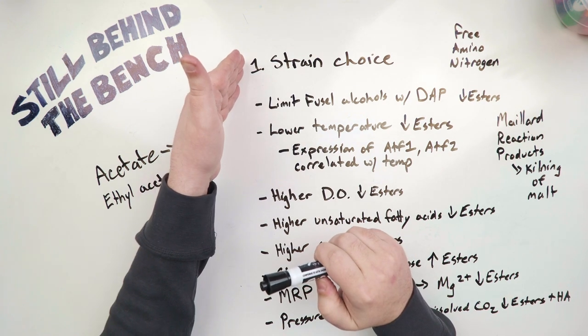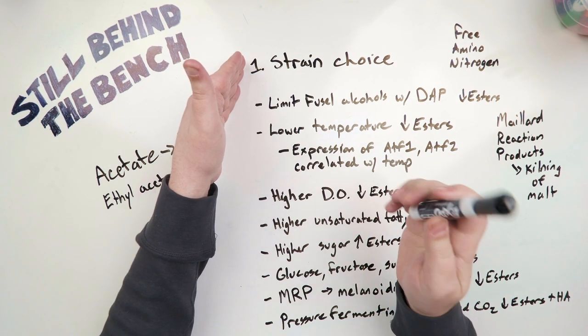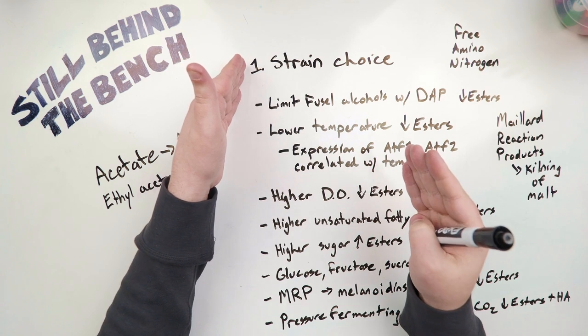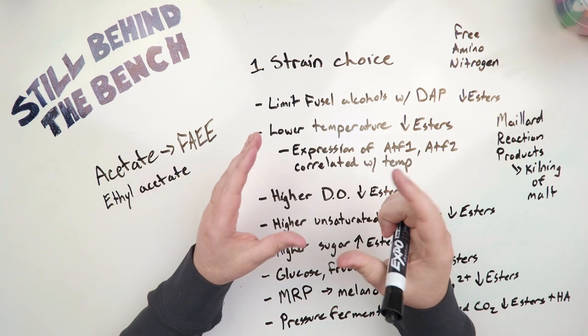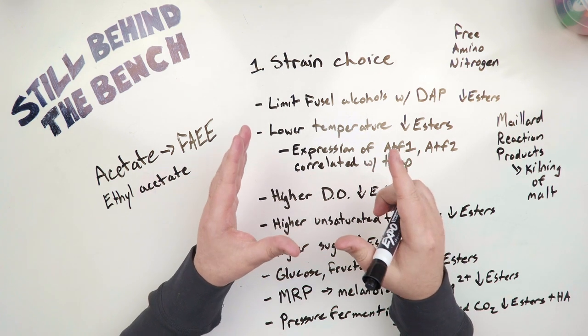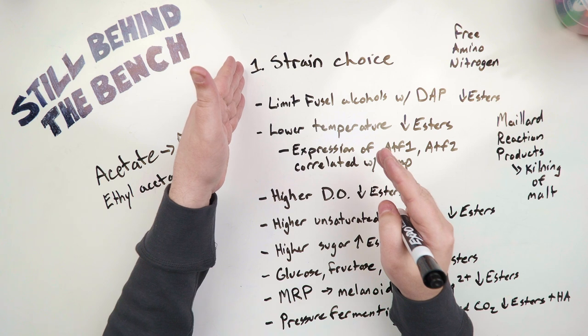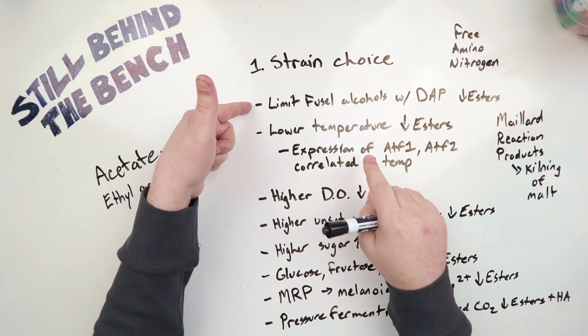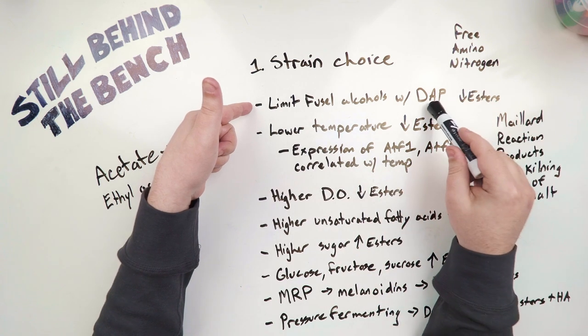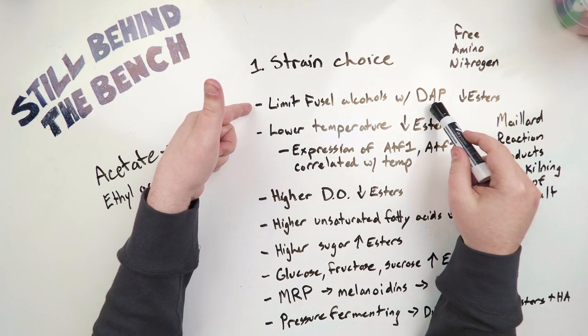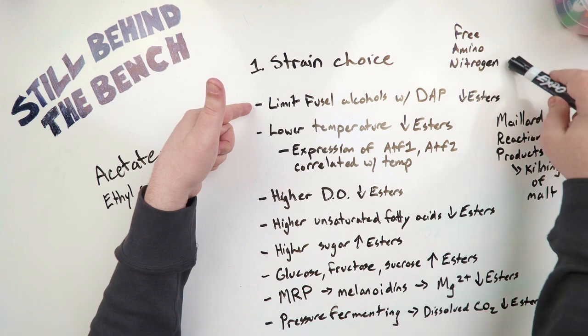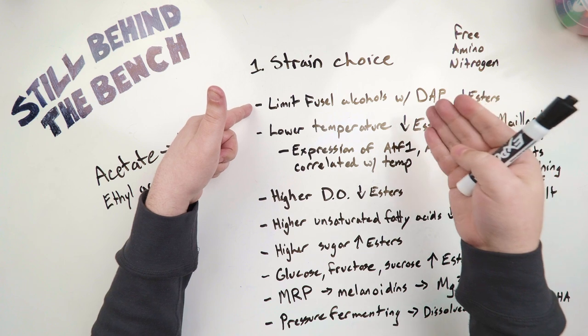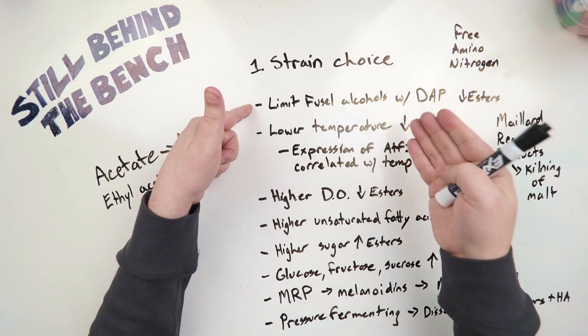But there are a lot of things we can do to try and limit the production of esters, or to promote them. The number one is strain choice. If your strain has been bred to not produce a lot of esters, then you're not going to get a lot of esters in the first place, as long as you stay within the environmental conditions that are stated on the package of that yeast. As for environment and the composition of the wort or must, we can limit the amount of fusel alcohols being produced in the first place by using DAP instead of FAN as your nitrogen. And FAN is free amino nitrogen, so using amino acids.